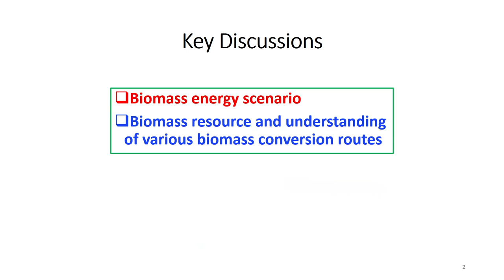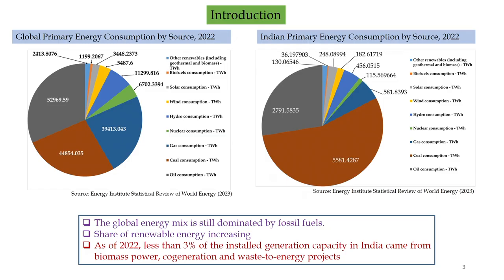Before we start our discussion, let us learn the energy distribution or energy mix in global and Indian perspective. The contribution comes from different sources — renewable or non-renewable. Most of the energy is coming from fossil fuels, which includes oil, gas, and coal extracted from the earth. If we consider the last 20 years, the share of renewable energy is really encouraging in both global and national context.